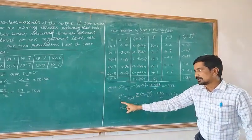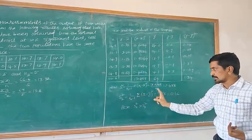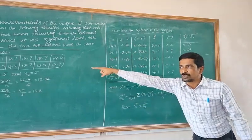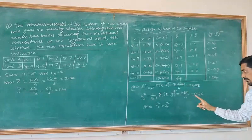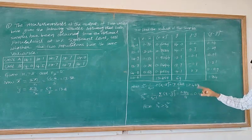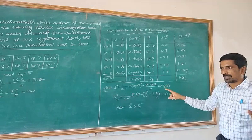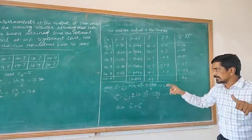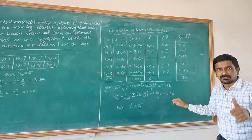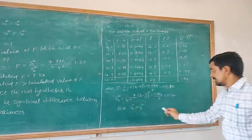Similarly, S2² equals 1 by (N2 minus 1) times the summation of (Yi minus Y-bar)², which is 1.84 divided by (5 minus 1) equals 4, giving S2² equal to 0.46. So S1² equals 3.372 and S2² equals 0.46. We observe that S1² is greater than S2², which is very important for determining the test statistic.